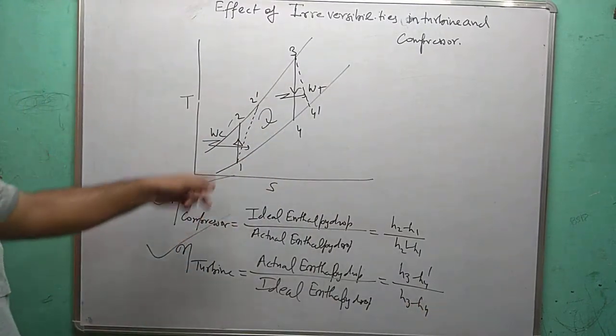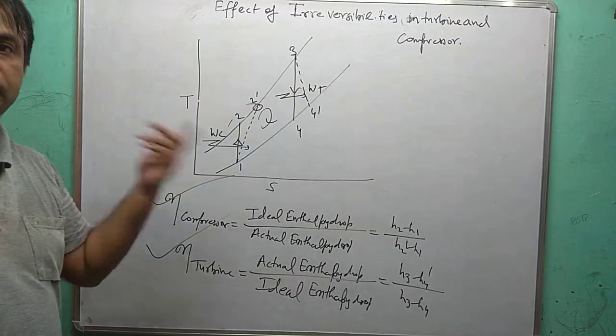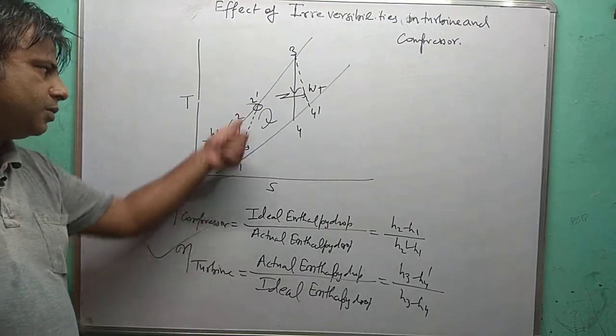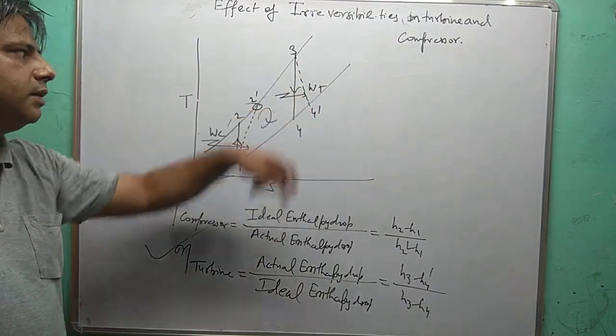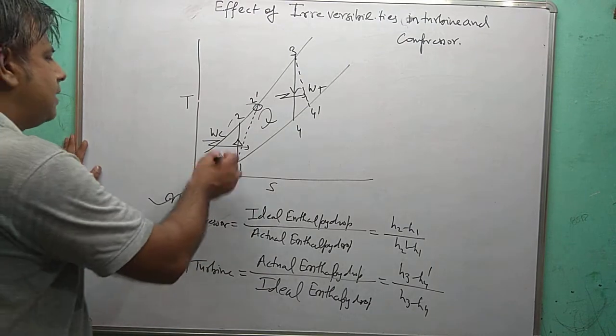So this is quite important. Due to irreversibility, H2 dash means due to irreversibility, the entropy of the process increases. Here also due to the irreversibility effect, the entropy of the turbine increases. So this is quite important.